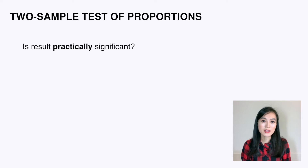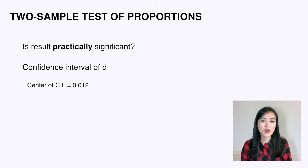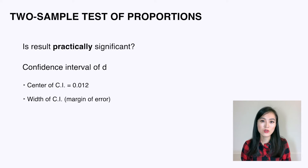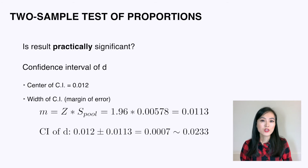We also want to know if the result is practically significant to help make the decision. To do this, we calculate the confidence interval of the estimation. We already know the center is 0.012. The margin of error m equals the z-score of the confidence level times the standard error, which comes to 0.0113. So the confidence interval is from 0.0007 to 0.0233.